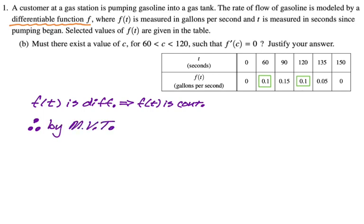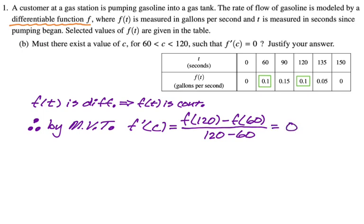F prime of C will equal the slope of that secant line. It'll be F of 120 minus F of 60 over 120 minus 60. And that, because the values of F are the same, is definitely 0. And then we'll just say for some C between 60 and 120.